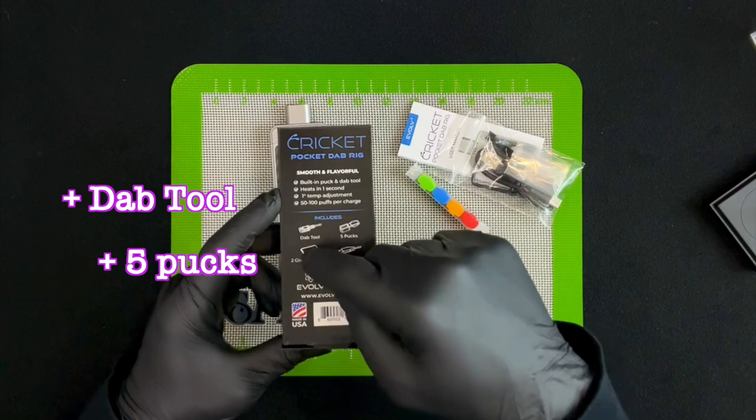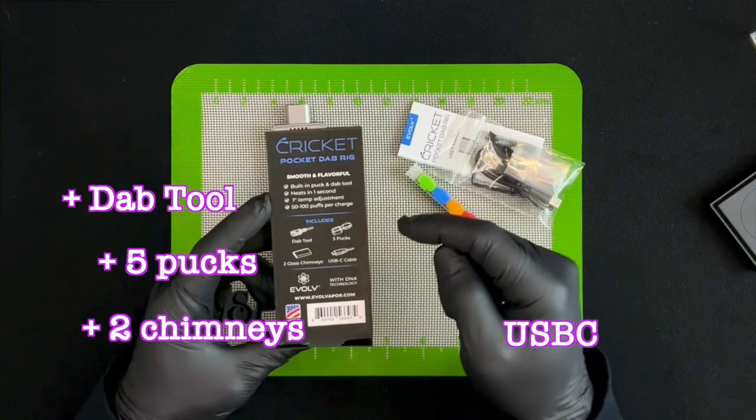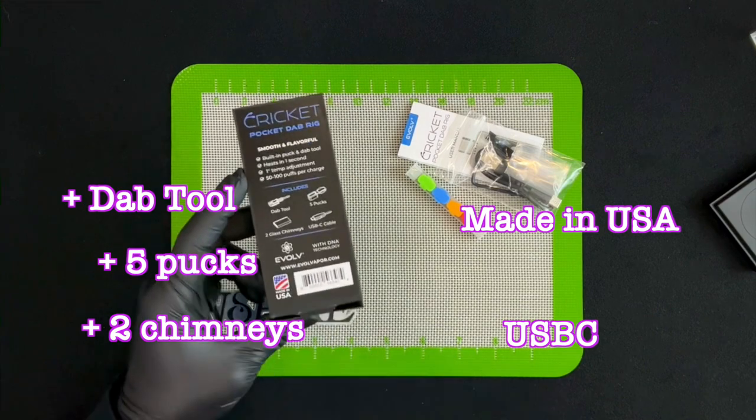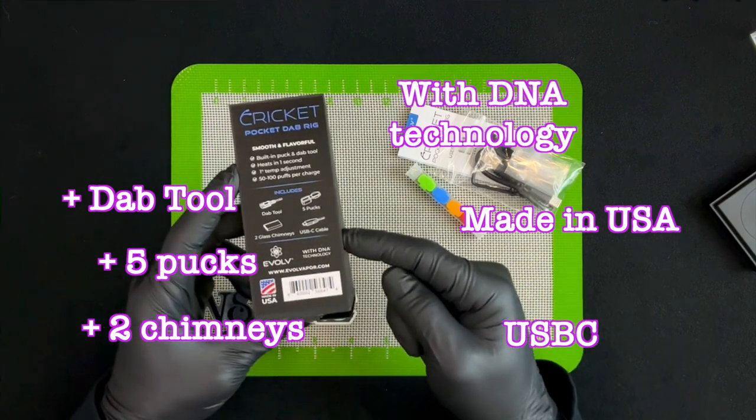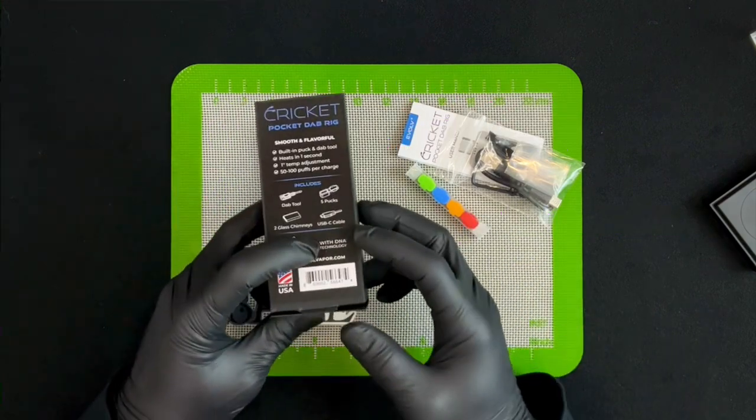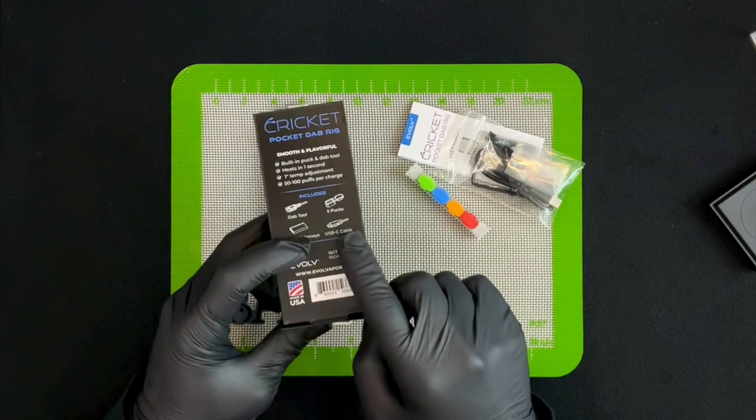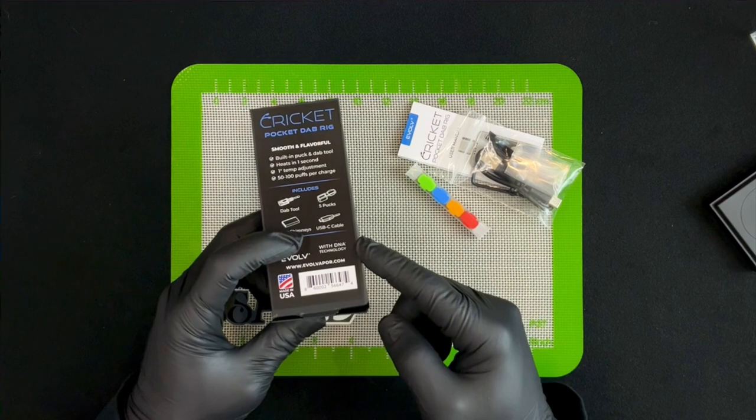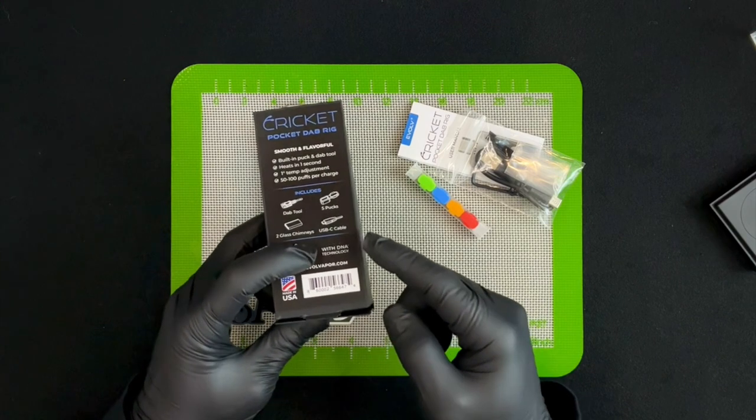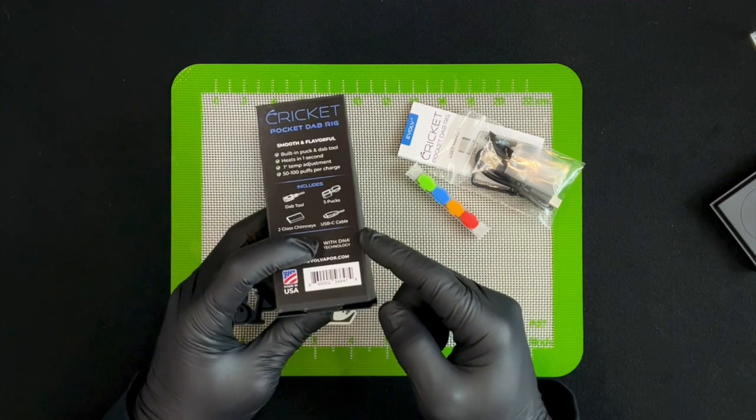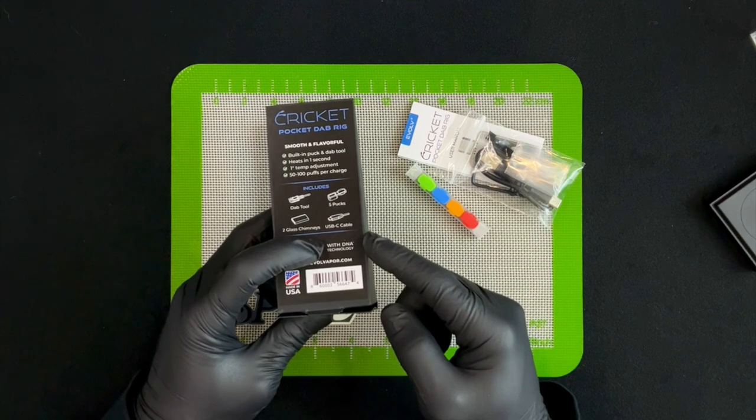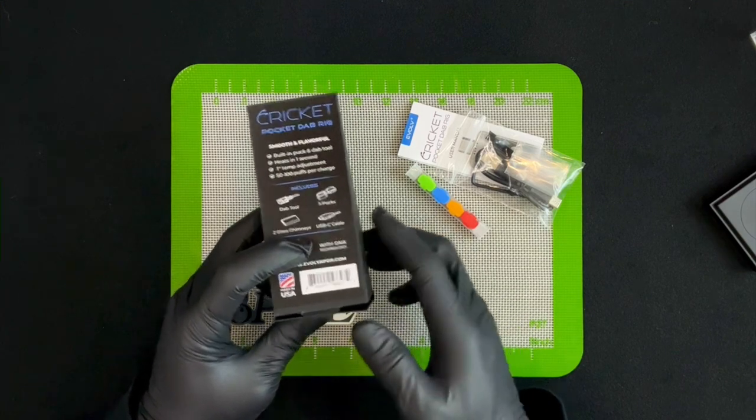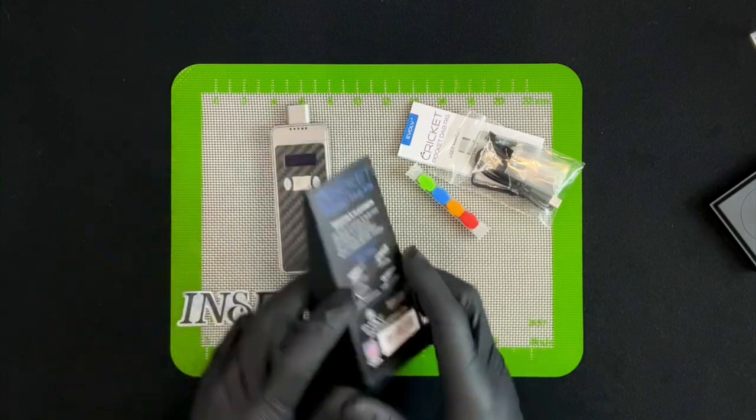Let's keep going. Includes dab tool, five pucks, two glass chimneys, USB-C, made in USA. I love that so much. With DNA technology. That's cool. For those of you that are familiar with the vape world or box mods, I know DNA chips are one of the more prevalent ones on the more cutting edge of that world's technologies. That's really cool to see in here.